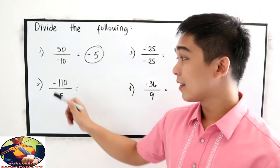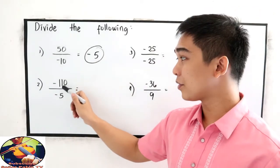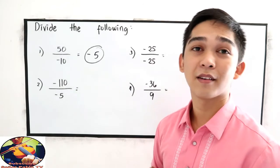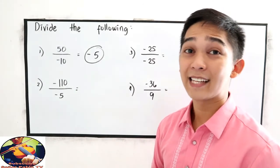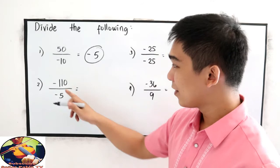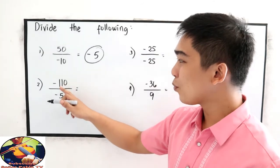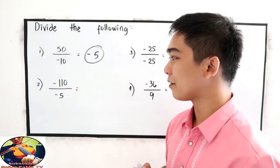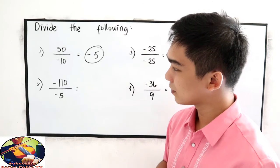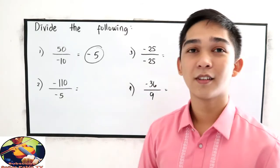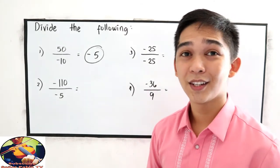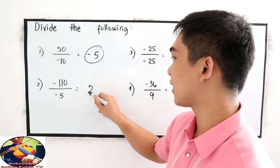Next, negative 110 divided by negative 5. Like signs, so the quotient is positive. 110 divided by 5 is 22, so the answer is positive 22.